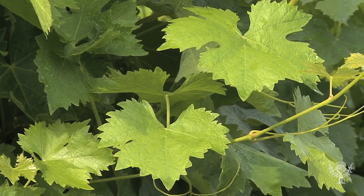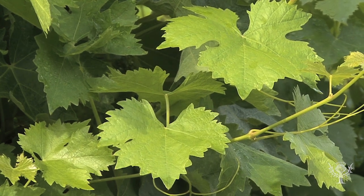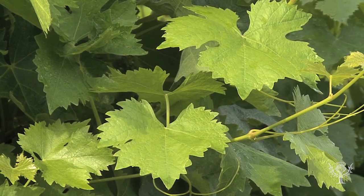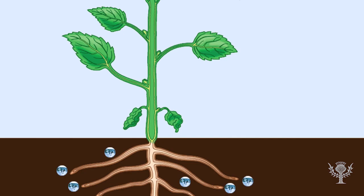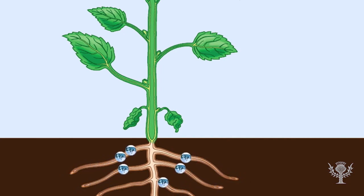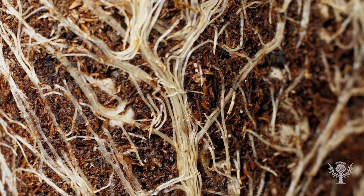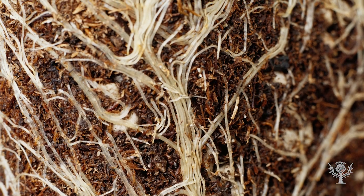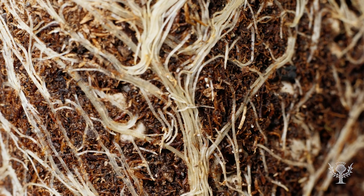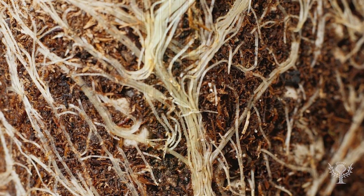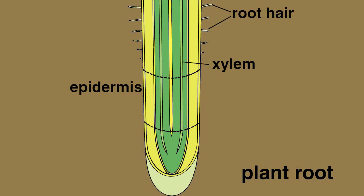In most land plants, oxygen and carbon dioxide enter through the leaves, while water and mineral salts enter through the root system. Substances can move into the root in several ways, with the principal method being osmosis.